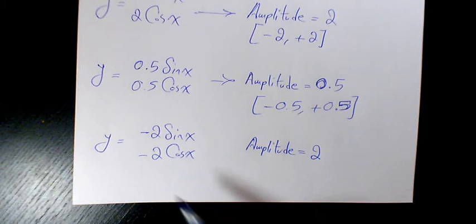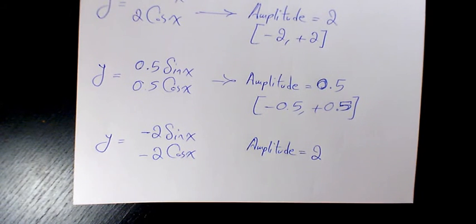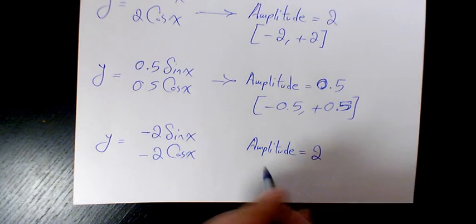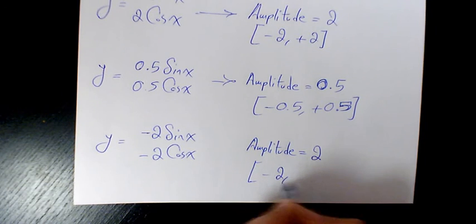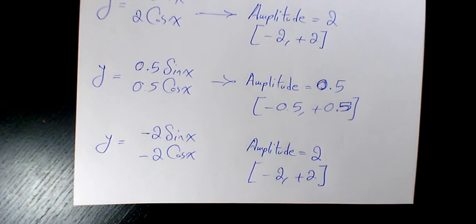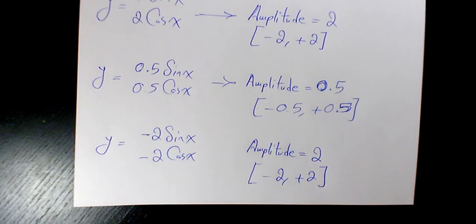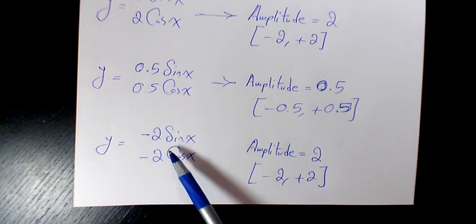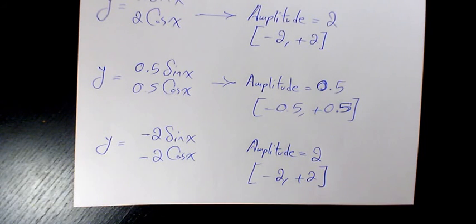Still the range is going to be negative 2 to positive 2, so we have again vertical stretch by factor of 2 in this case, but it is reflected over the x-axis because it's negative. So basically this is the concept of amplitude in trigonometric functions.